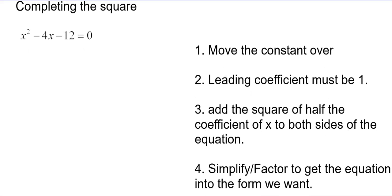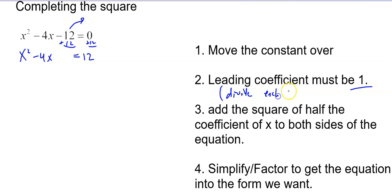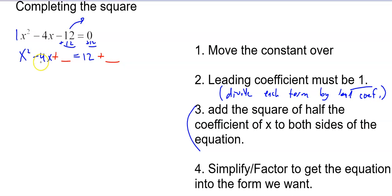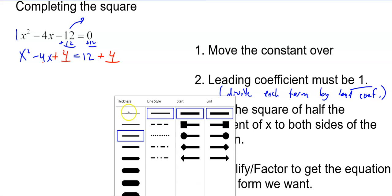Let's start with the easy case, when that middle term is even — it's not too bad. First step, very important: you want to add 12 to both sides, so x squared minus 4x equals 12. The leading coefficient must be 1; if not, you need to divide each term by the leading coefficient. In this case the leading coefficient is 1, so we skip that step. Now we take half the middle term and square it and add it to both sides. Half of 4 is 2, 2 squared is 4. So we add 4 to both sides — to be fair, you have to add the same amount to both sides.